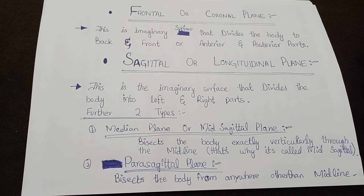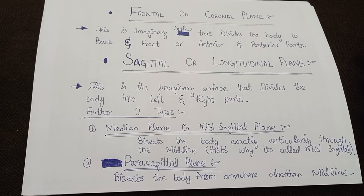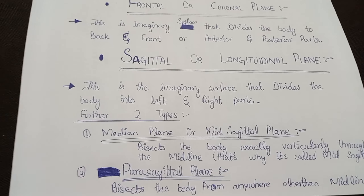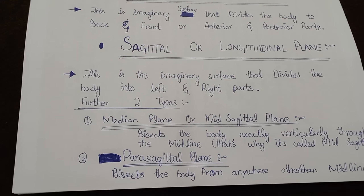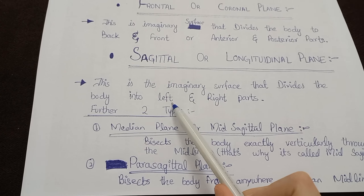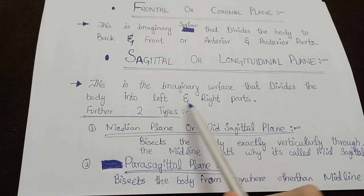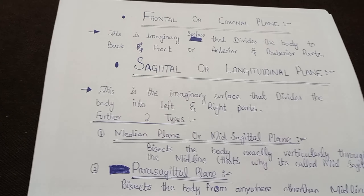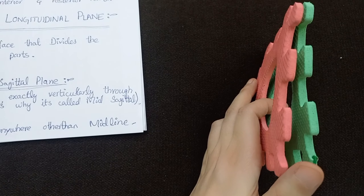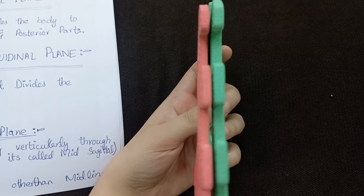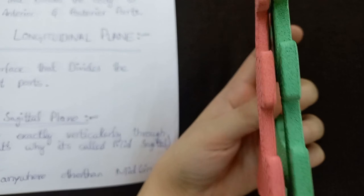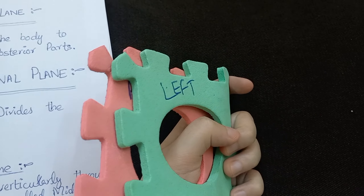Now moving towards the sagittal plane, that is also known as the longitudinal plane — this is an imaginary surface that divides the body into left and right parts.